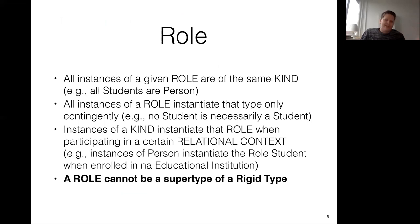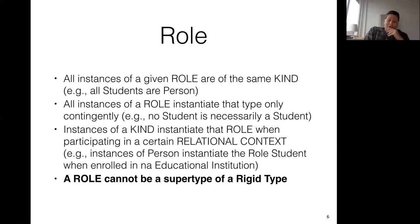For UFO, roles are types such that all instances of that type are of the same kind — for example, all students are people. All instances of a role instantiate that type only contingently — no student is necessarily a student. Entities can move in and out of the extension of student without losing their identity. Instances of a kind instantiate a role when participating in a given relational context — in order to be a student, you have to be enrolled in an educational institution. These constraints come from the theory and govern the behavior of this primitive in the language.